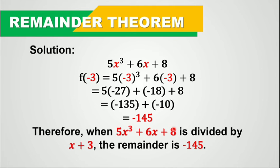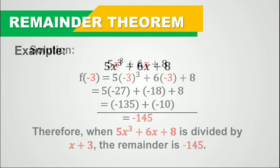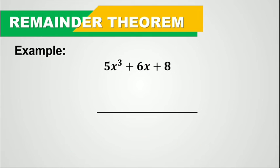Therefore, when 5x cubed plus 6x plus 8 is divided by x plus 3, the remainder is negative 145. So let's use synthetic division again to see if our remainder would still be negative 145.